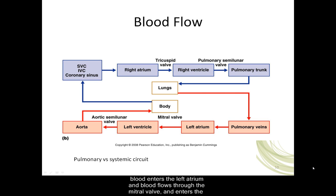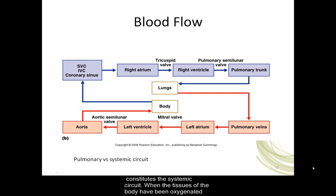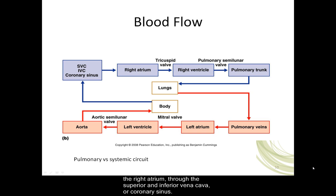The blood enters the left atrium and flows through the mitral valve into the left ventricle. When the left ventricle contracts, blood is pushed through the aortic semilunar valve and enters the aorta. The aorta branches into peripheral vessels and peripheral capillary beds in the systemic circuit. When the tissues of the body have been oxygenated, the blood returns through small venules to larger veins and ultimately leads back to the right atrium through the superior and inferior vena cava or coronary sinus.